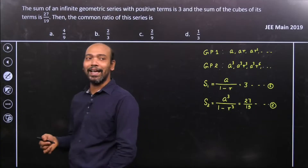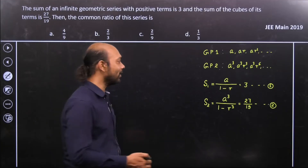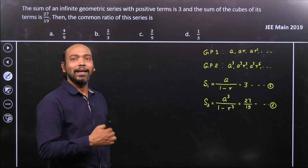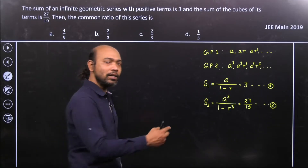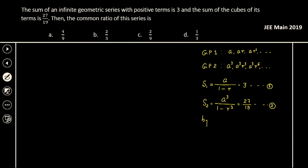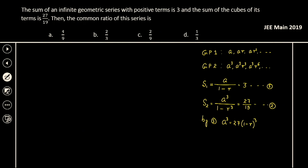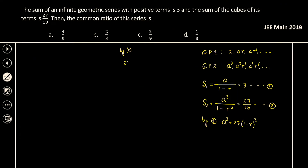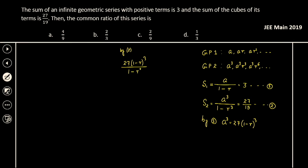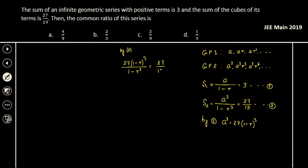Our job is to eliminate A and R from these two equations. From equation 1, we can write A as a function of R. By equation 1, we get A³ = 27·(1 − R)³. Substituting into equation 2 gives us 27·(1 − R)³ divided by (1 − R³) equals 27/19.